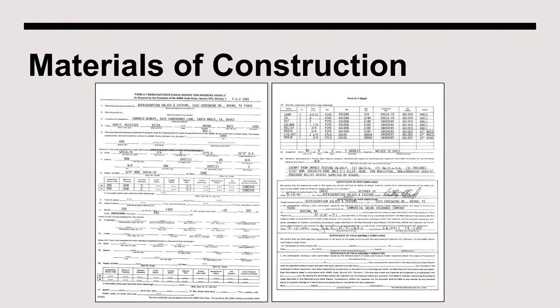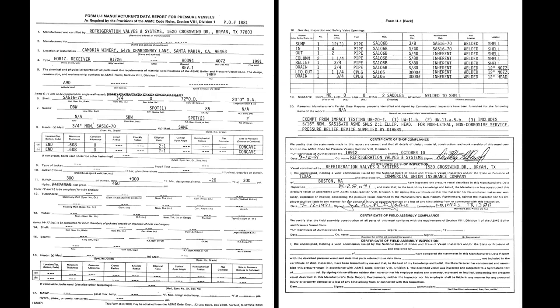When documenting the materials of construction for a high pressure receiver or any pressure vessel, the key document is the Manufacturer Data Report. A closer look shows that the U1 form describes the steel specification and thickness for both the head and the shell of the vessel. The next page includes a listing of all vessel connections, including the size, grade, and schedule of the nozzle.